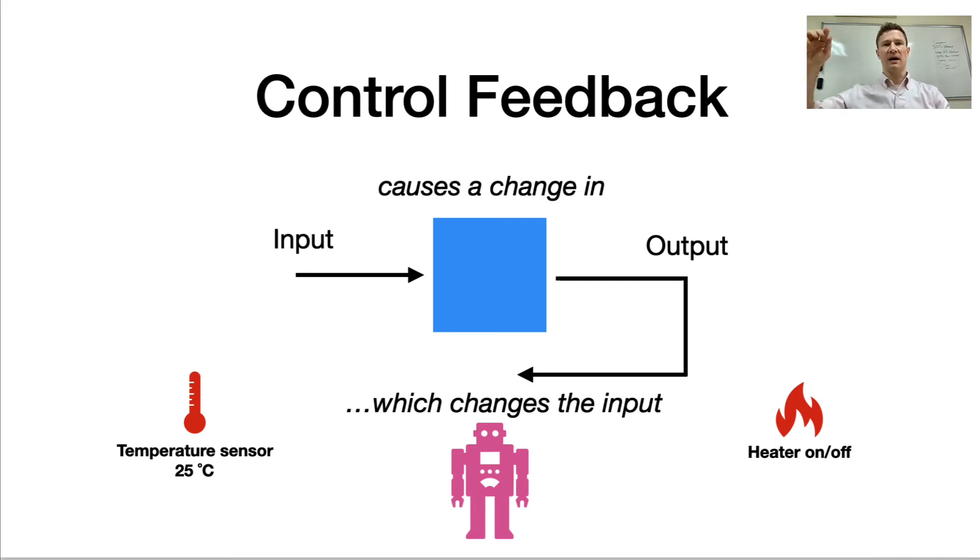So we have that output, which is the heater, which is going to automatically increase the temperature in the room. So there's a connection between the output, which is the heater, that directly changes the input, which is the temperature sensor. You don't always have that connection between an output and an input, where the output directly changes the input.